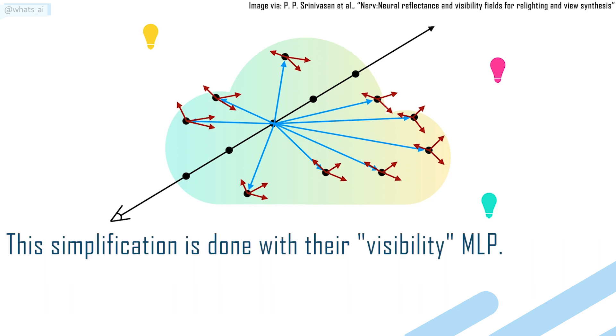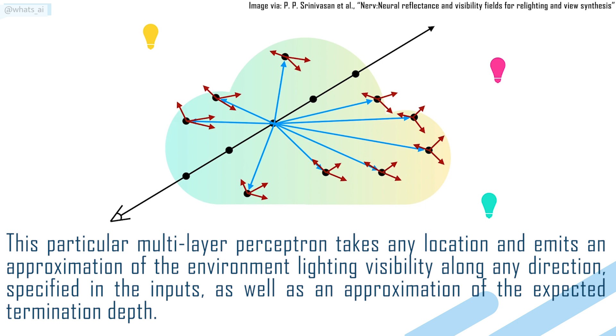This simplification is done with their visibility MLP. This particular multi-layer perceptron takes any location and emits an approximation of the environment lighting visibility along any direction specified in the inputs, as well as an approximation of the expected termination depth.